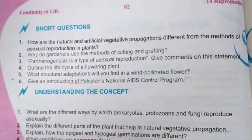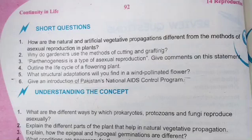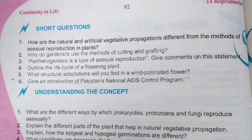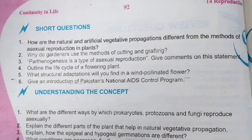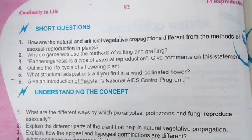The first question is: how are natural and artificial vegetative propagation different from the methods of asexual reproduction in plants? The detail answer is on page number 70. For natural vegetative propagation methods we will discuss bulbs, corms, rhizomes, stem tubers, suckers, and vegetative propagation by leaves. For artificial methods, we discuss cutting and grafting.